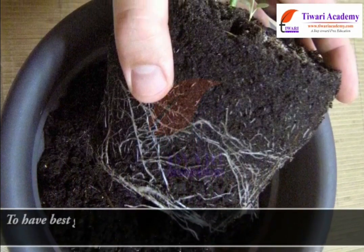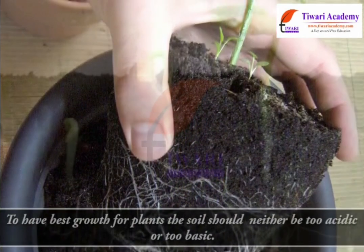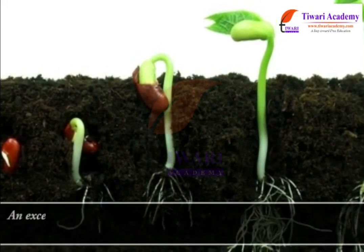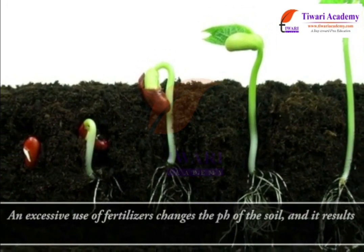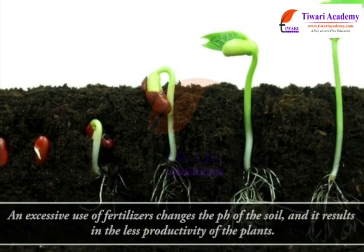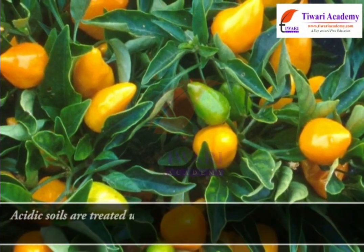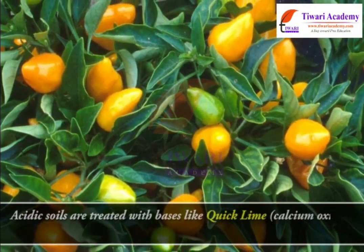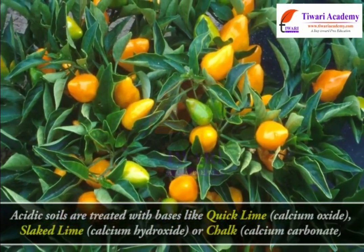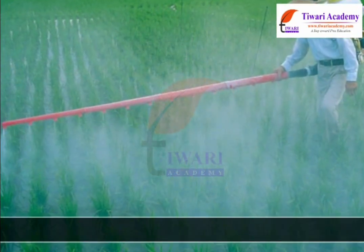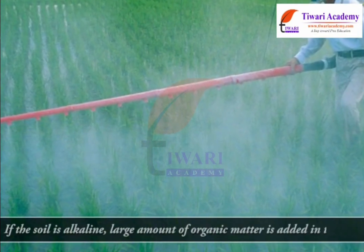Neutralization in everyday life. For best plant growth, the soil should neither be too acidic nor too basic. Excessive use of fertilizers changes the pH of the soil, resulting in less productivity of the plants. Acidic soils are treated with bases like quicklime (calcium oxide), slaked lime (calcium hydroxide), or chalk (calcium carbonate). If the soil is alkaline, a large amount of organic matter is added to the soil.